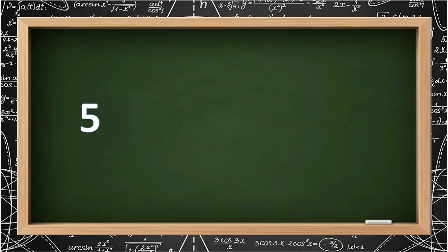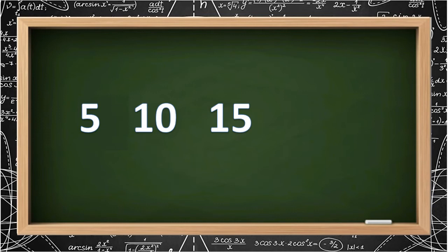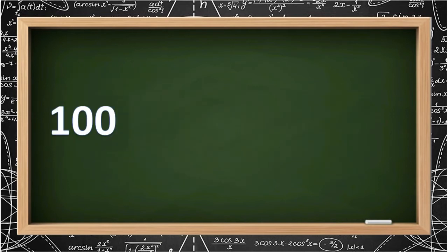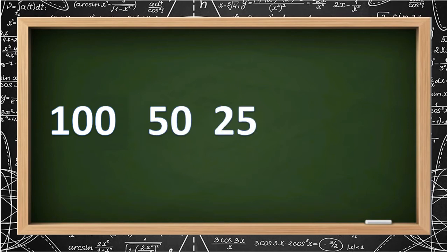Just like in 5, 10, 15, 20. When the terms in the sequence decrease, it may involve subtraction or division, just like in 100, 50, 25, 12 and one half.